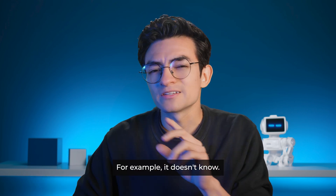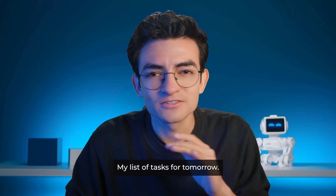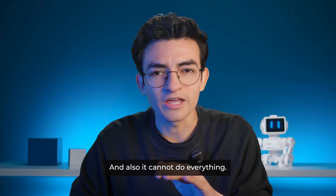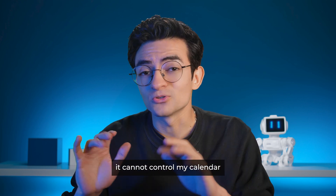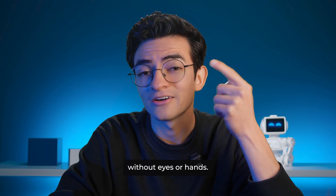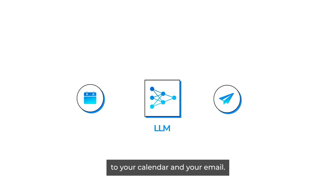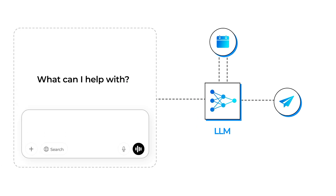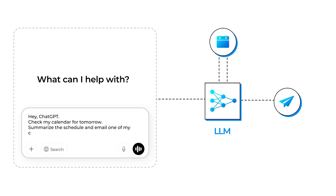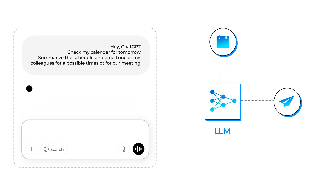But ChatGPT doesn't know everything. For example, it doesn't know my list of tasks for tomorrow. And also, it cannot do everything — for example, it cannot control my calendar to plan a meeting. It is like a brain without eyes or hands. Imagine giving that brain access to your calendar and your email. Now you can tell ChatGPT: check my calendar for tomorrow, summarize the schedule, and email one of my colleagues for a possible time slot for our meeting. Now it's not just generating text — it is performing specific tasks using specific tools. This setup is called an AI workflow, or sometimes a tool-augmented LLM.